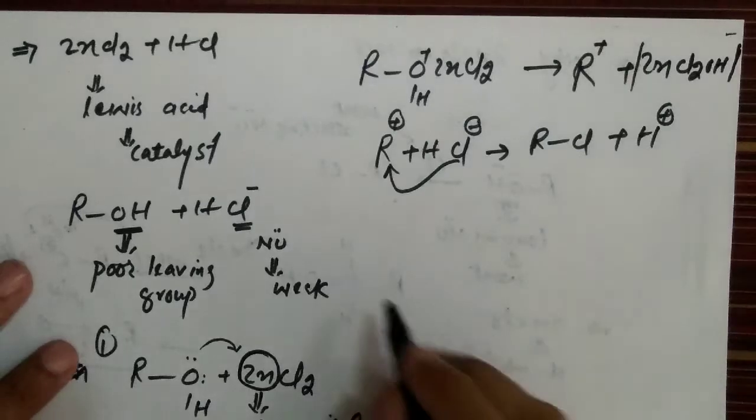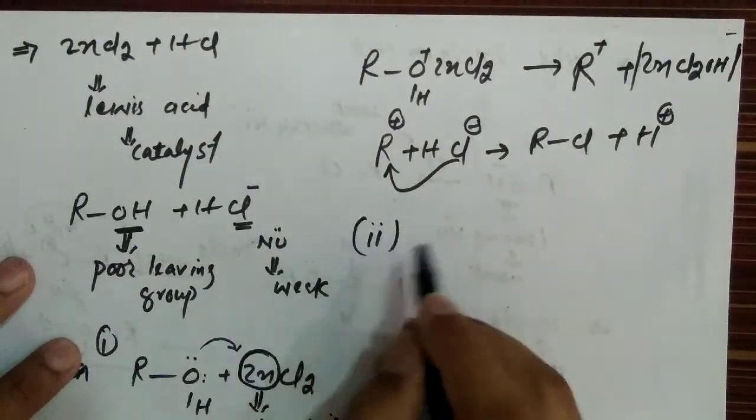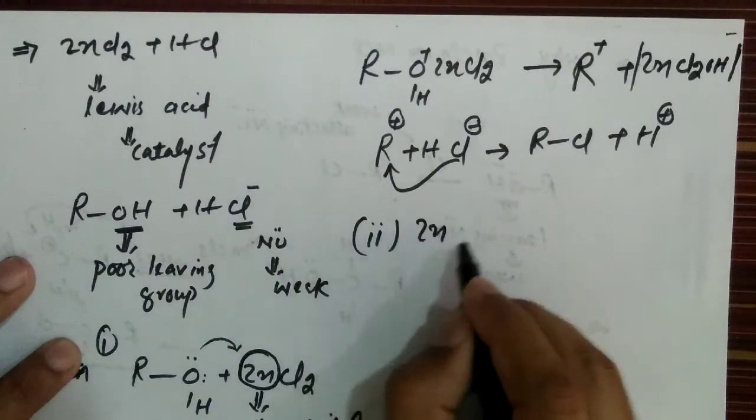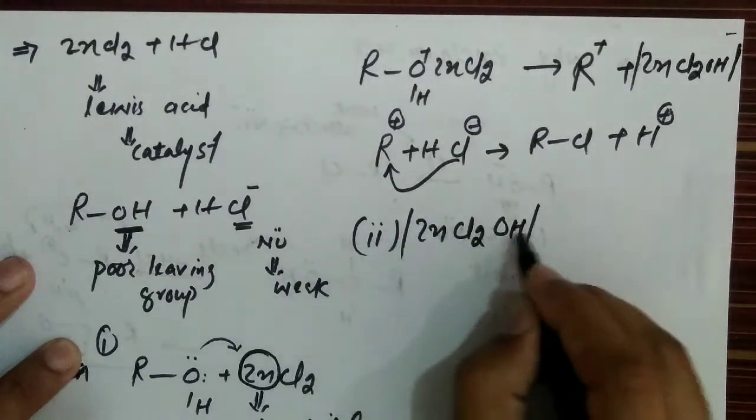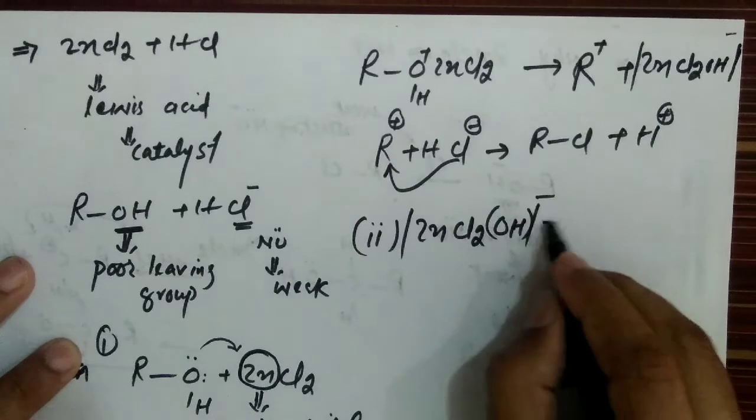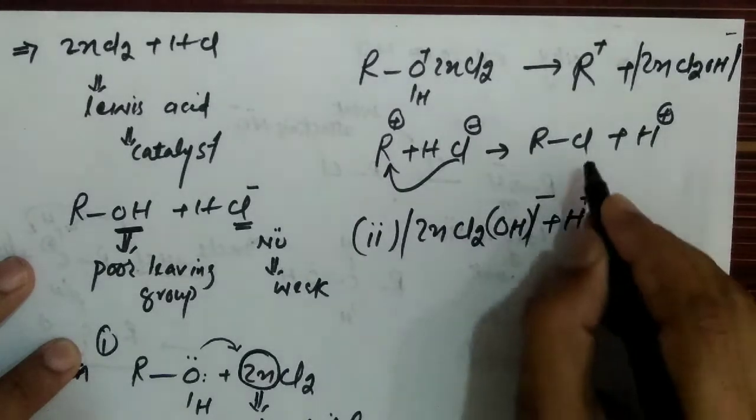Now, next, second step, ZnCl2-OH whole negative plus H positive from here.